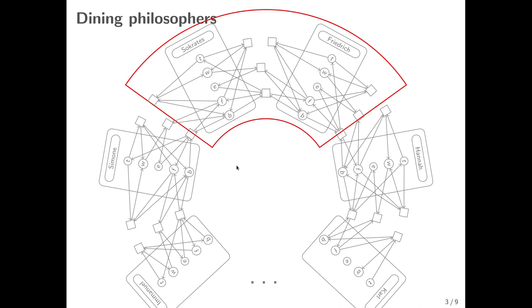We present here six philosophers and the transitions between them in the Petrinet. But as the dots indicate, this can be scaled up arbitrarily large — there might be more philosophers dining at this round table.